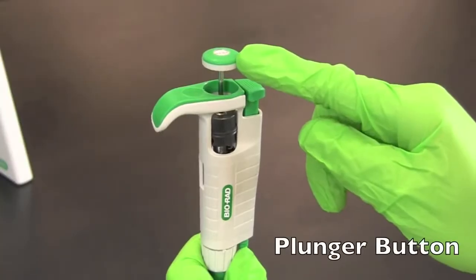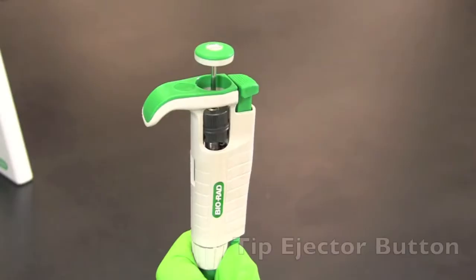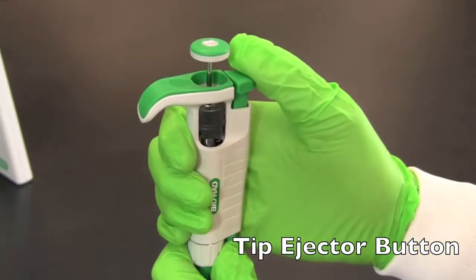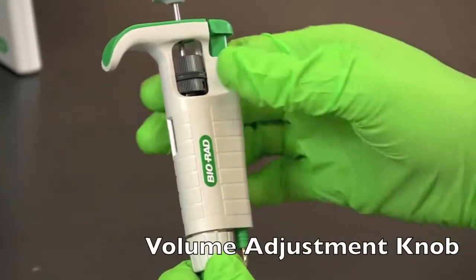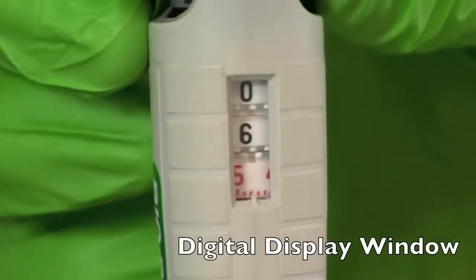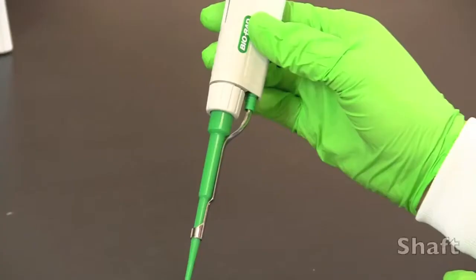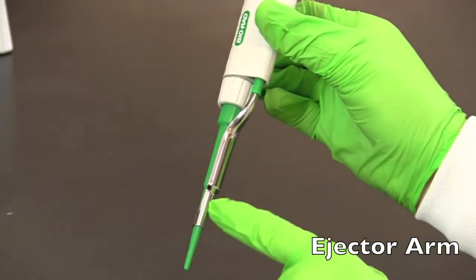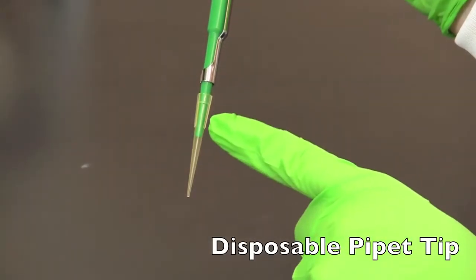The parts of a micropipette include the plunger button used to fill and dispense samples, the tip ejector button used to remove used tips, the volume adjustment knob used to adjust the volume you wish to transfer, the digital display window that displays the volume being selected, the shaft, the ejector arm which ejects used tips, and a disposable pipette tip.